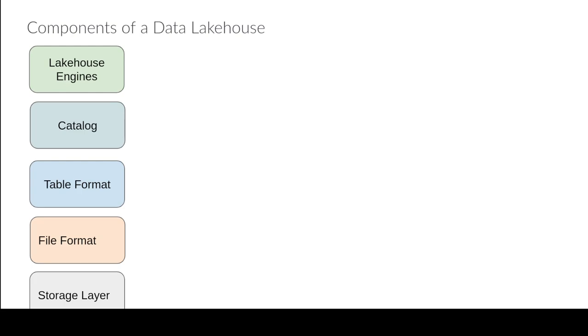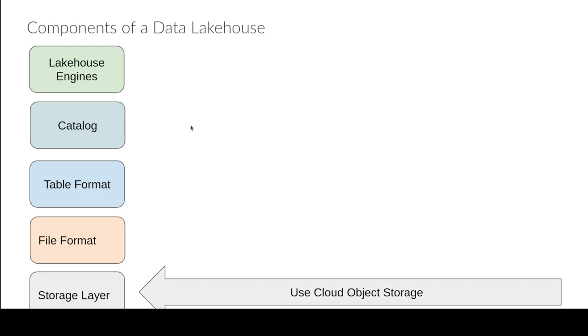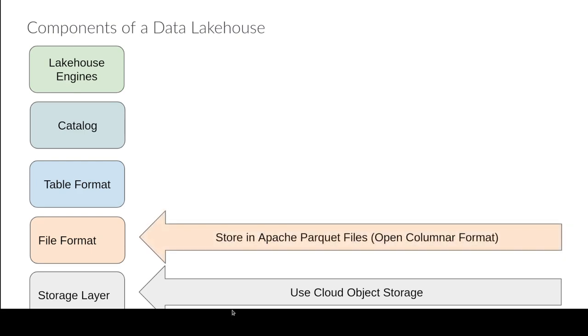Putting those components together is a lot easier nowadays. You get all the benefits — all the performance, all the features — at a fraction of the cost, along with no lock-in or lock-out. The first layer is storage: where you're going to store your data. That could be cloud object storage or distributed file system clusters. Nowadays everything is moving toward cloud object storage. Then you store your data in an open file format optimized for analytics.